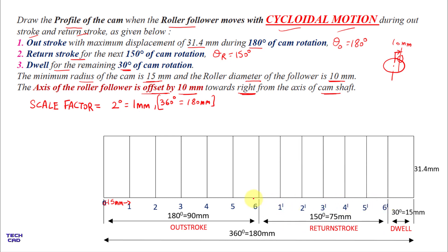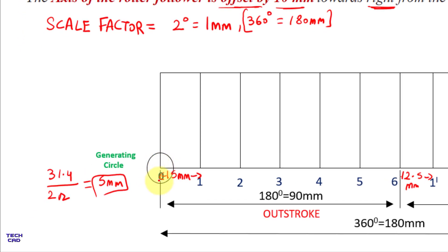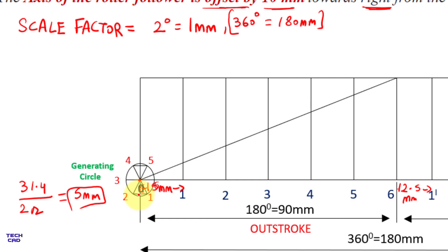Name the return stroke divisions from 1-dash to 6-dash, each division equal to 12.5 mm. At point O, make a generating circle. The generating circle radius equals the maximum displacement divided by 2π: 31.4 divided by 2π equals 5 mm. So with a radius of 5 mm, make a circle at point 0 and divide this circle into six equal parts, because we divided the outstroke and return stroke into six equal parts. Now join from 4 to 5 and from 2 to 1.